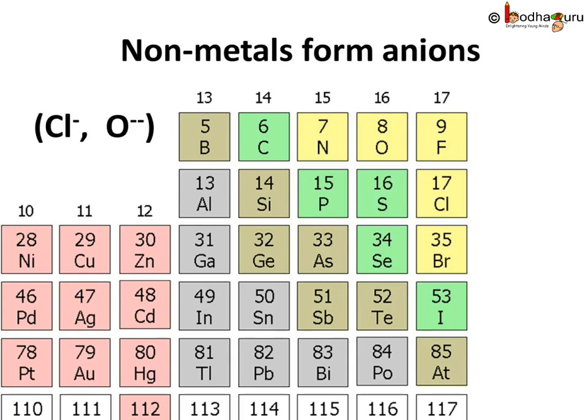On the other hand, non-metals, which we see on the right side of the periodic table, have 5, 6, or 7 valence electrons. So acquiring or gaining electrons would be easier for them to achieve the octet state. They gain electrons during chemical reactions and form stable anions.